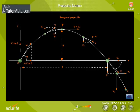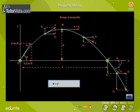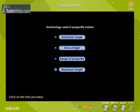Range of projectile is defined as the distance between the point of projection and the point where the trajectory cuts any plane. R is equal to V0 square sin2θ by g.